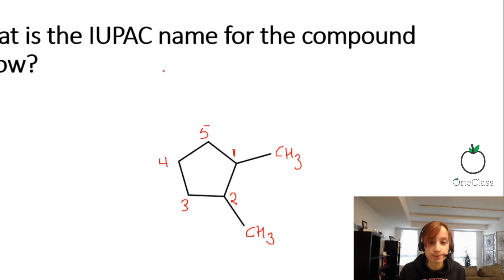Now the way this is written, we put our numbers first. So we have 1,2-dimethyl. That accounts for all our substituents, our decorations are accounted for.